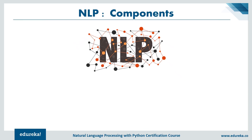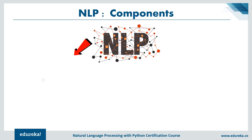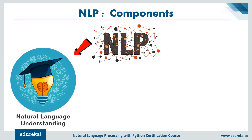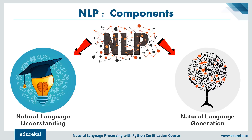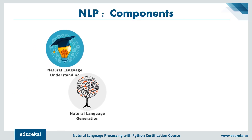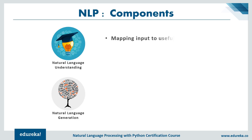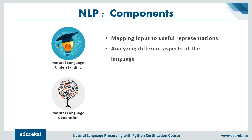NLP is divided into two major components: Natural Language Understanding (NLU) and Natural Language Generation (NLG). NLU involves mapping input into useful representations and analyzing different aspects of the language. NLG is the process of producing meaningful phrases and sentences in the form of natural language, involving text planning, sentence planning, and text realization. NLU is generally considered harder than NLG.